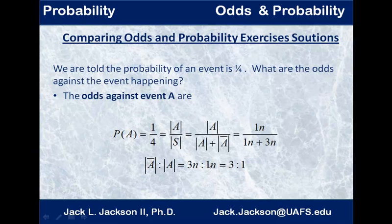Okay, or really 3n to 1n, but the n's cancel out. So, shortcut, do the 4 minus the 1 for the first number, and then just the numerator on the second one. That gives us a quick introduction to odds and probability.